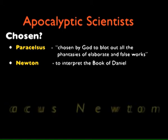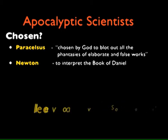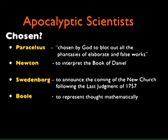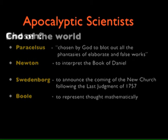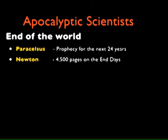Newton saw his mission in the anagram of his name — Jehovah Sanctus Unus. He believed he was chosen by God to interpret the Book of Daniel. His interest in planetary motion and chronology was all secondary to his interest in scripture — he was trying to date the end of time. Swedenborg thought he was chosen to announce the coming of the new church following the last judgment. Boole also thought he had been given a mission. A lot of apocalyptic scientists obsess about the end of the world. Paracelsus's last book was called Prophecy for the next 24 years — talking about floods and the coming of the Antichrist. Newton wrote 4,500 pages on apocalyptic investigation over 50 years and never came up with a final date. Swedenborg thought the last judgment would come in 1753.